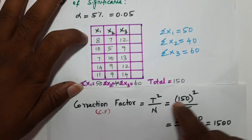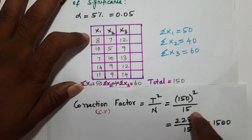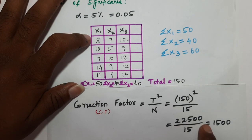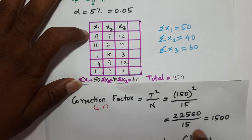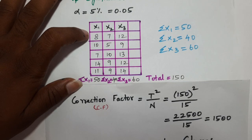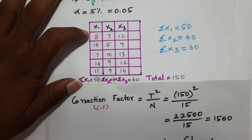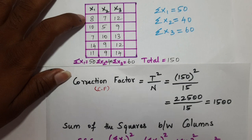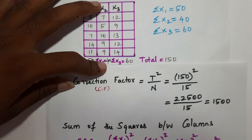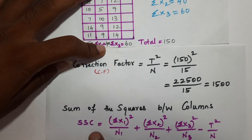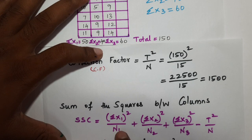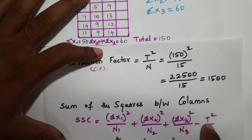T equals 150, so CF = 150 squared divided by 15. 150 squared is 22,500 divided by 15, giving CF = 1500. Next, the sum of squares of columns (SSC) formula is: SSC = (sigma x1)² / n1 + (sigma x2)² / n2 + ... minus CF.